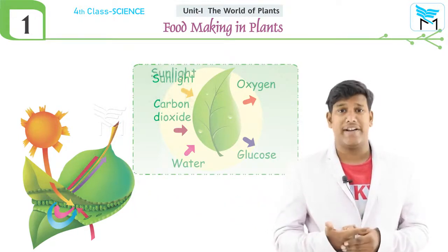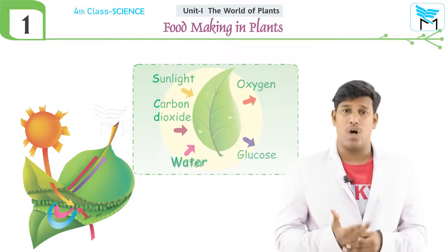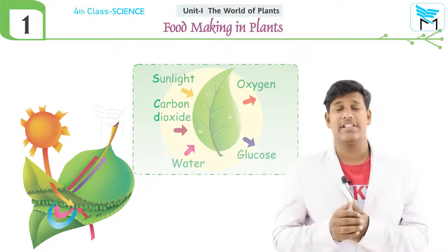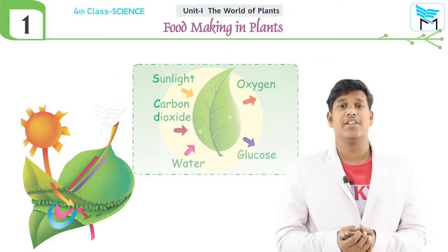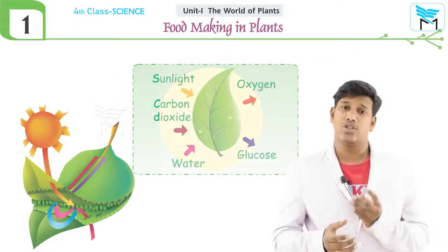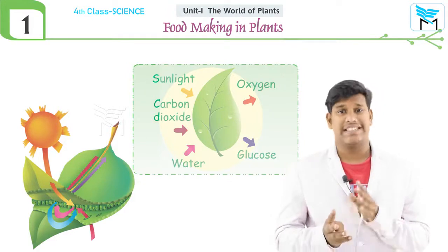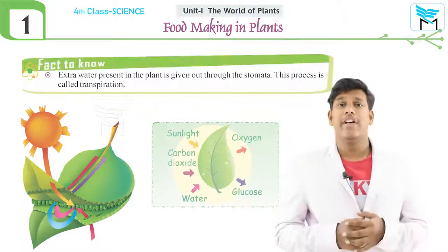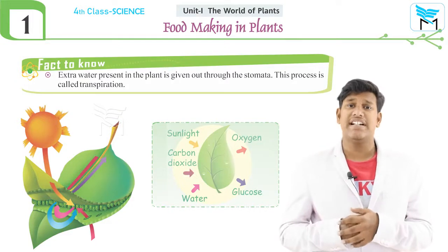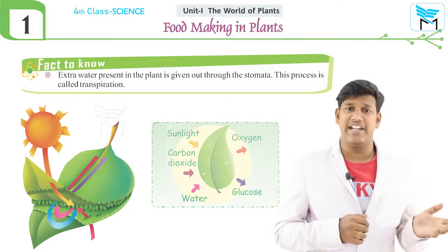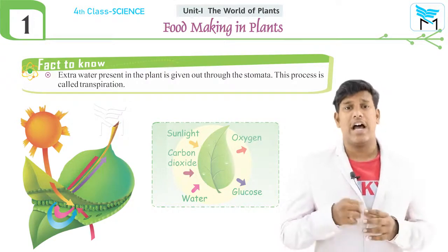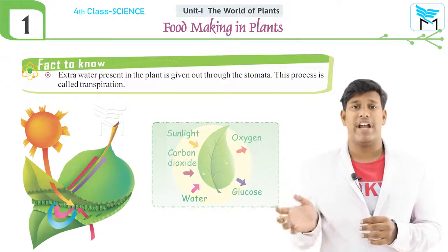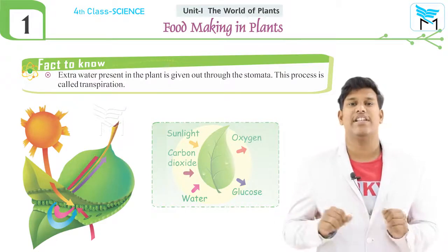Plants get these resources from various structures — soil, sun, and air. Do you know the extra water which is present inside the leaf will come out through a structure known as stomata? This process is known as transpiration.